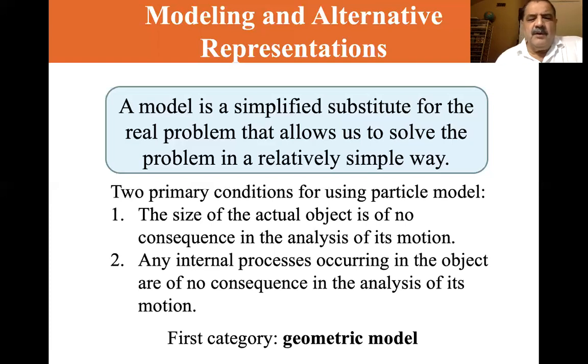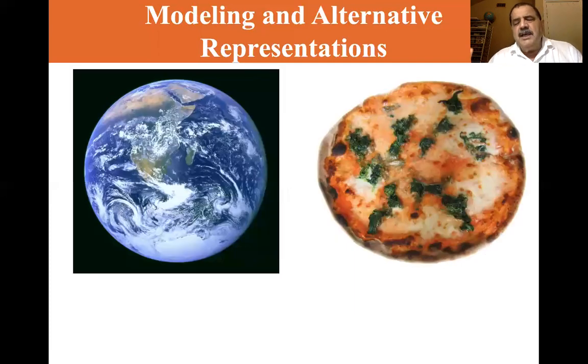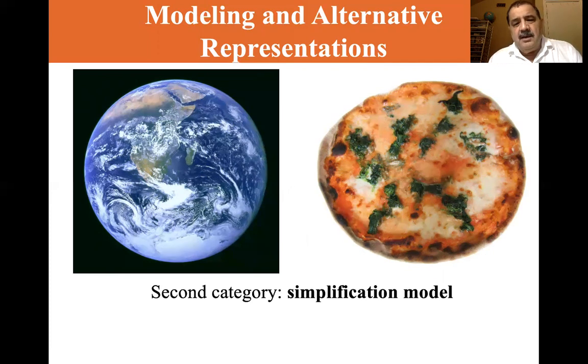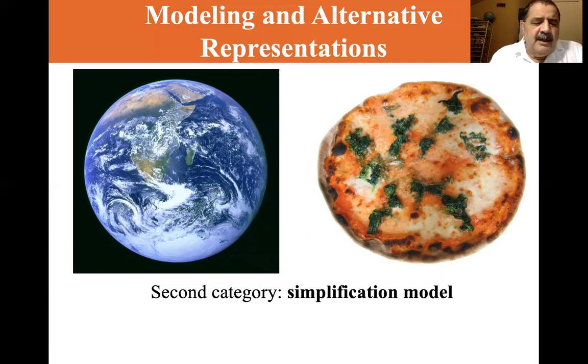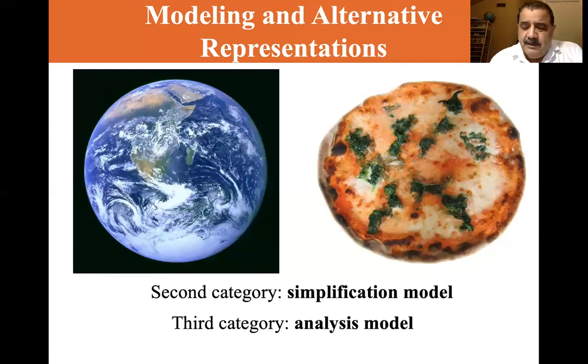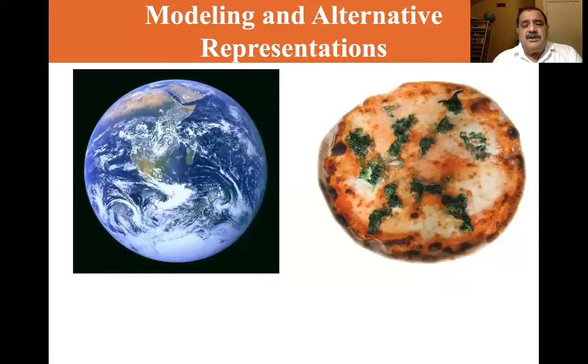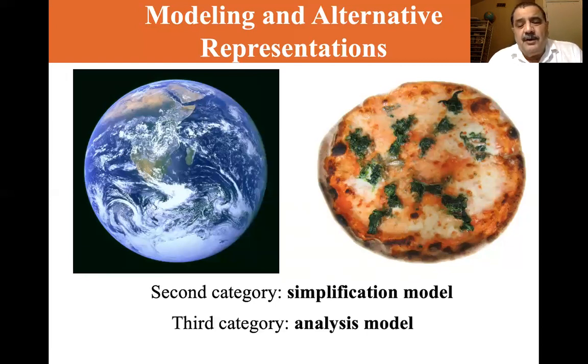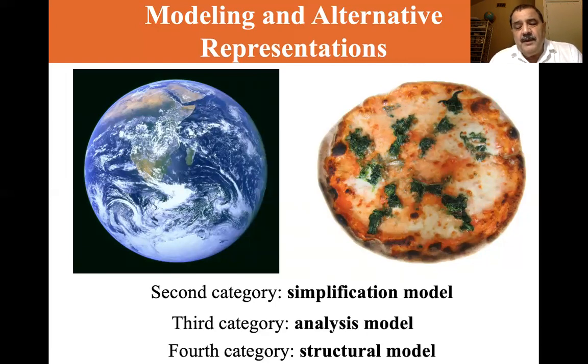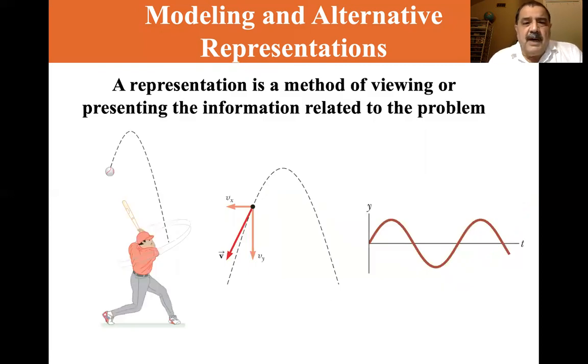So the first category is a geometric model. I've already discussed how we can represent the whole Earth, you can simplify it as a point of mass. So let's go back. The first is a geometric model. The second is a simplification model. The third is an analysis model and the fourth is a structural model.